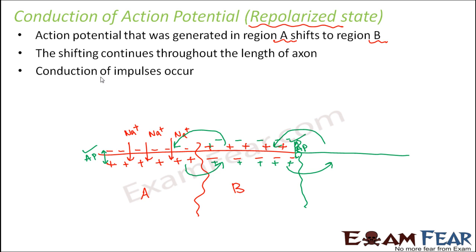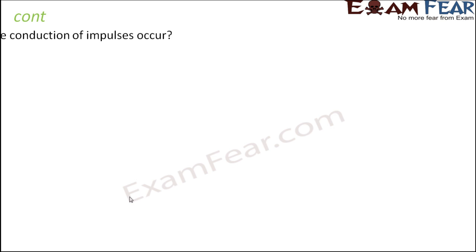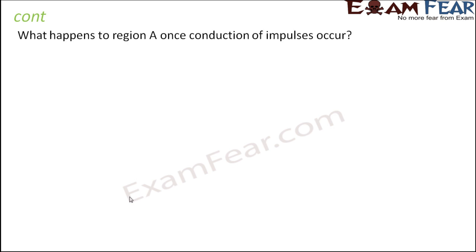This shifting continues throughout the length of the axon, and this is how conduction of impulses occurs. Now one important thing to notice: we understood how the action potential is shifting from one region to another. But what is happening to the region which is left behind? When the action potential has shifted from A to B, what happens to region A? That is something interesting and important to understand.